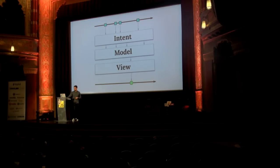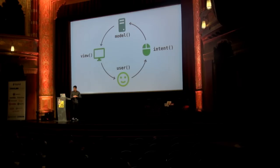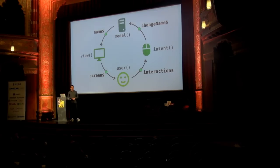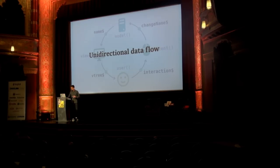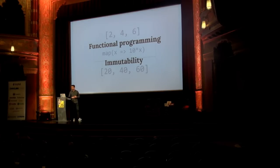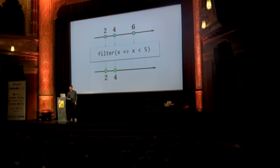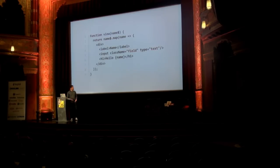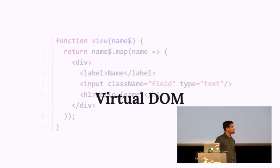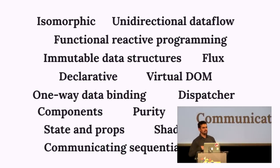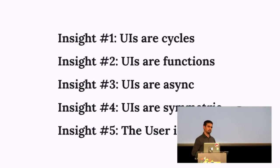You can choose to either do it one way or another — it's up to you as the programmer. So what have we just made here? Model, view, user, and intent are functions, and between each of them is an event stream. The nameStream is the output of the model and the input of the view, and screenStream is the output of the view and the input of the user, and so forth. And guess what — this is unidirectional data flow. This thing here was functional programming and immutable techniques. These food sticks were reactive programming. And the divs that the view creates are using the virtual DOM.